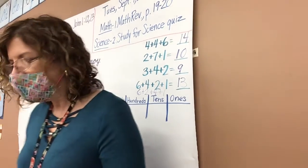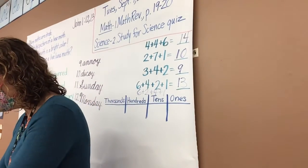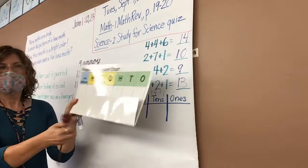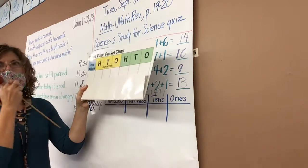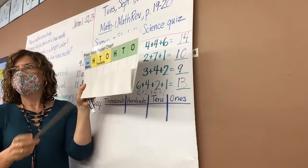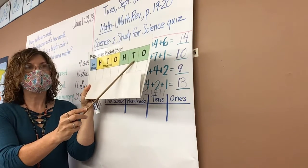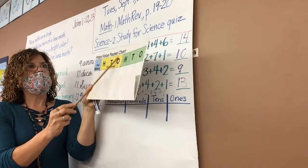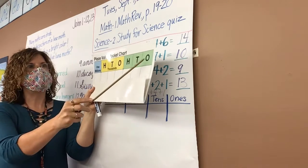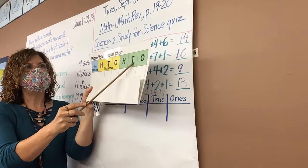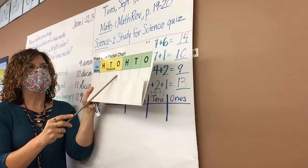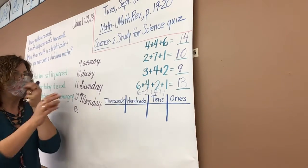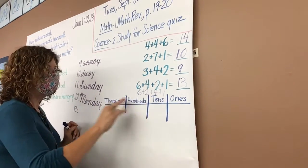The next thing we're going to do is talk about place value. I'm going to show you my chart — eyes on the chart, please. So this O stands for ones, the T is tens, the H is hundreds, and this O is the thousands. Let's do it again: ones, tens, hundreds, thousands. And I've actually written on the board the ones, the tens, the hundreds, and the thousands.